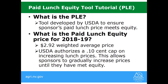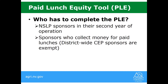We're going to transition into the second part of our webinar: the Paid Lunch Equity Tool Tutorial. What is PLE? It is a tool developed by USDA to ensure that sponsors' paid lunch prices meet equity — they want to make sure you're charging enough for paid lunches. The paid lunch equity for 2018-19 is set at $2.92 weighted average price. USDA does authorize a $0.10 cap on increasing lunch prices, allowing you to gradually increase your weighted average price to meet equity rather than raising prices all at once.